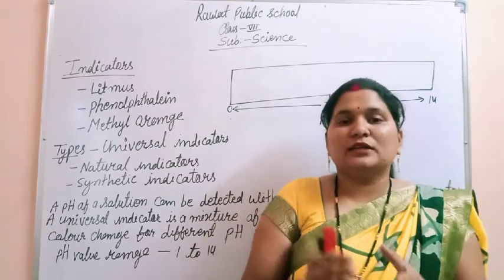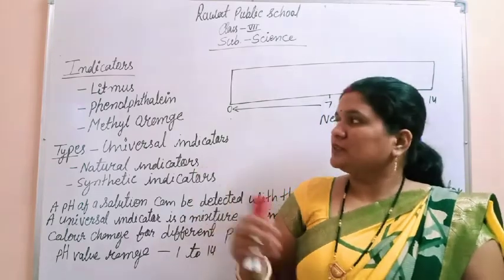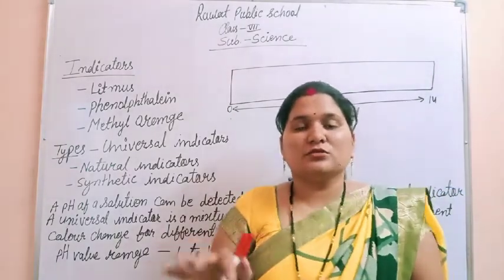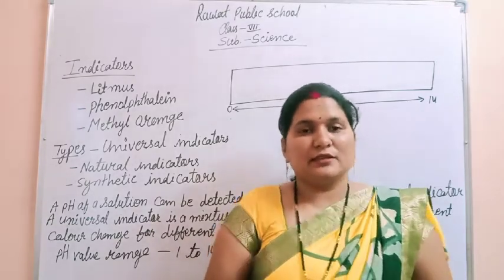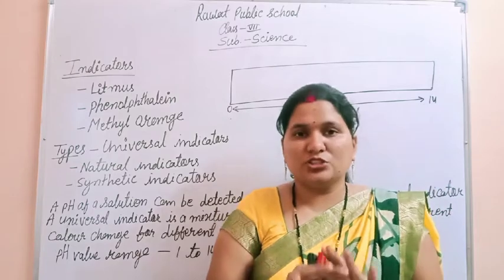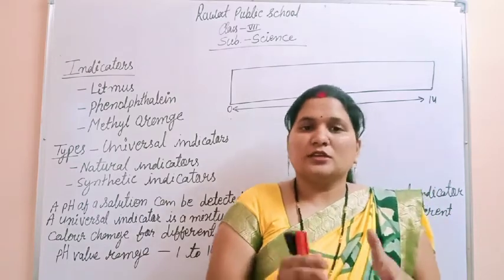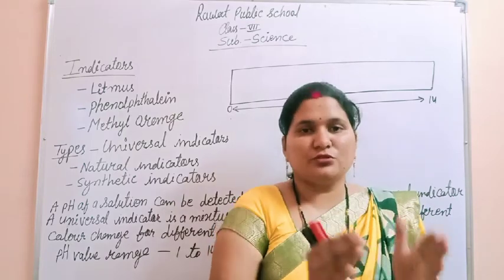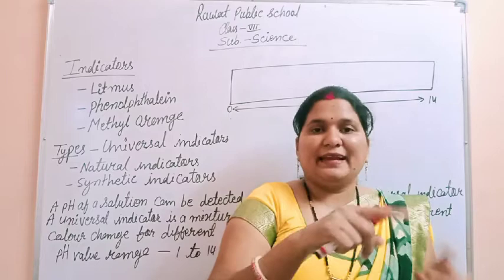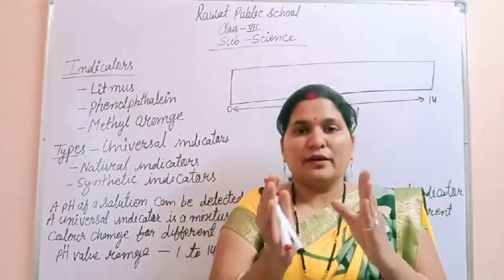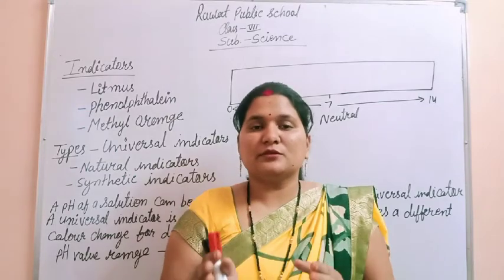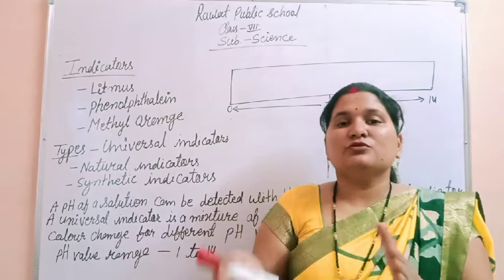There are two colors of Litmus paper. If we put red Litmus paper into any solution and it does not change its color, it means the solution is either acidic or neutral. Because when red Litmus paper comes into contact with a base, it turns blue.